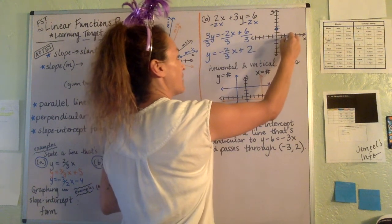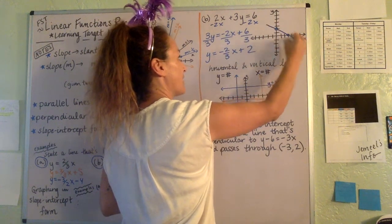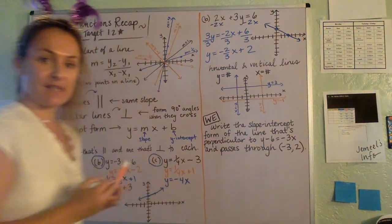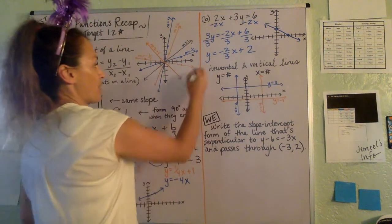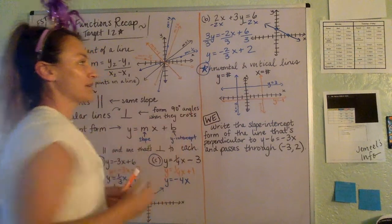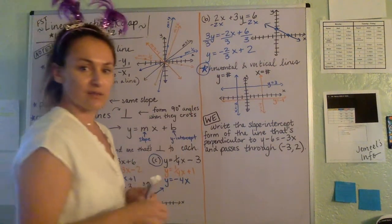And so now we'll go up to 2. And from there the slope is negative 2 over 3. So because it's negative, instead of going up and over, we're going to go down 2 and over 3 and connect the dots. And there we go. One more point to consider here is horizontal and vertical lines.